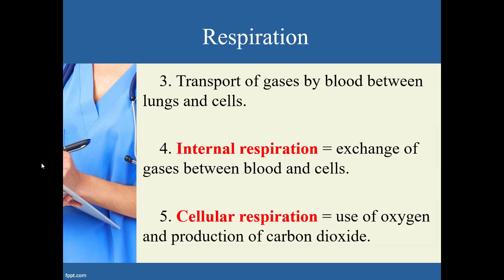That leads you to internal respiration — the exchange of gases between the blood and the cells. Don't confuse internal versus external respiration. The last step is cellular respiration, which is a series of chemical reactions that use oxygen to produce ATP and also produce the byproduct of carbon dioxide. This includes glycolysis, the Krebs cycle, and the electron transport chain — steps we won't get into for this class.